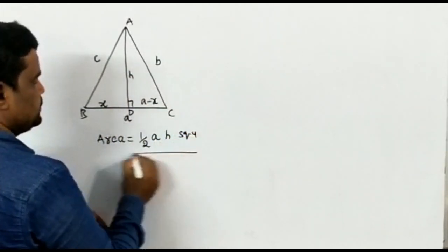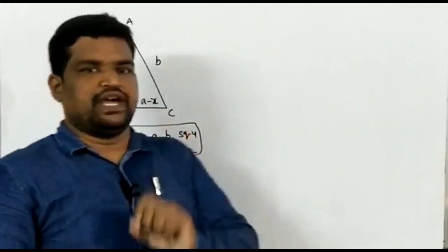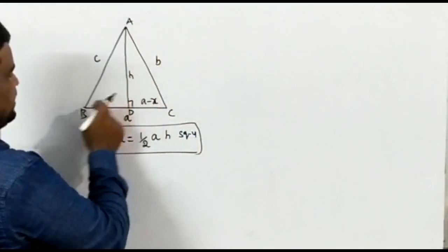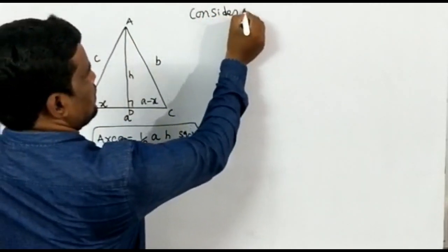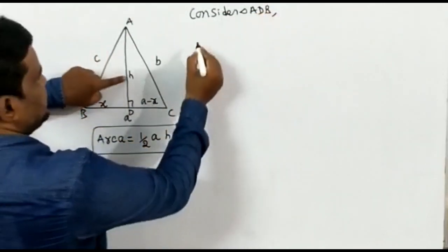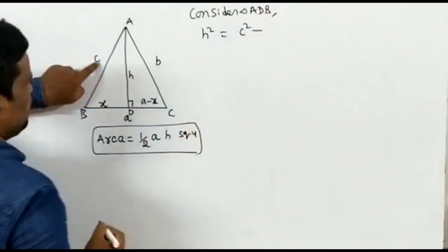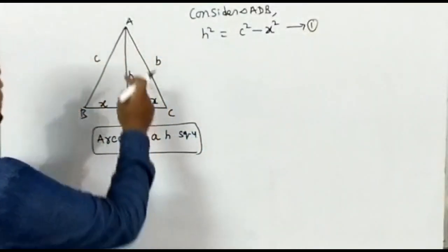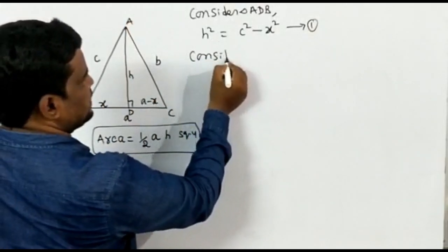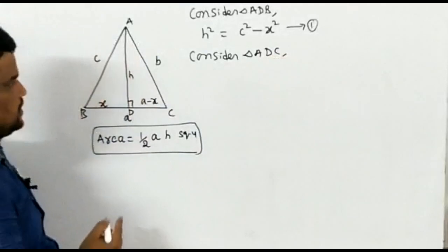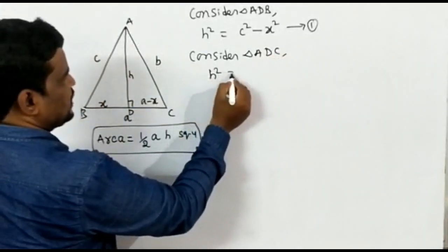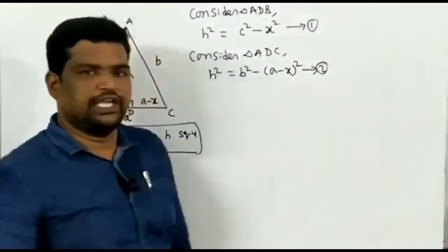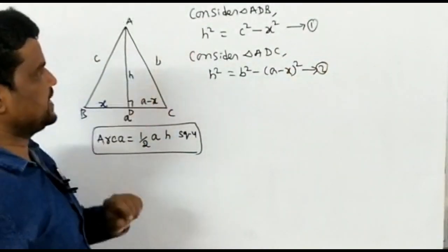We can find H using Pythagoras' theorem. Consider triangle ADB: H² = C² − X² ... (equation 1). Now consider triangle ADC: H² = B² − (A−X)² ... (equation 2).